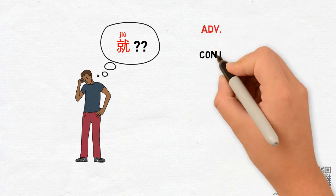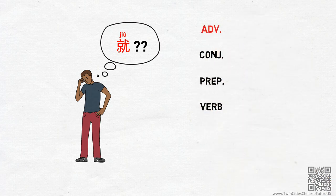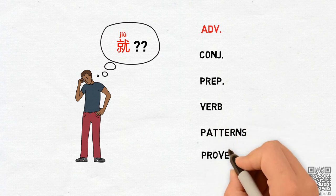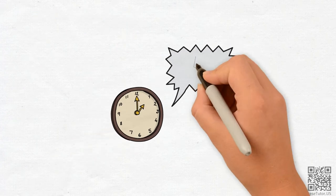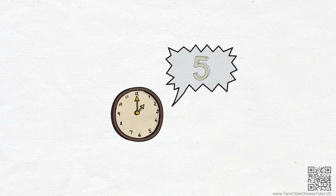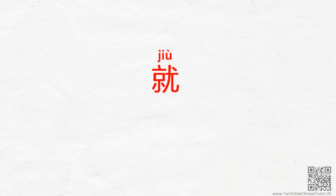Jiu can be an adverb, a conjunction, a preposition, or a verb. It also appears in many patterns and proverbs. In order to provide a simpler framework to help Taylor understand the word, this video is the first in a series which will break down the common ways we use jiu in Chinese. In the next 5 minutes, we are going to look at the most common ways jiu is used as an adverb. Let's start.